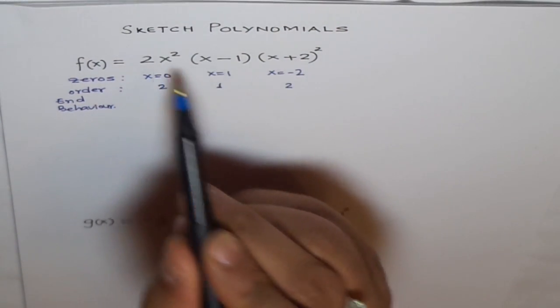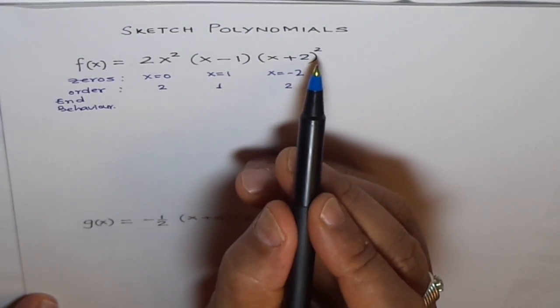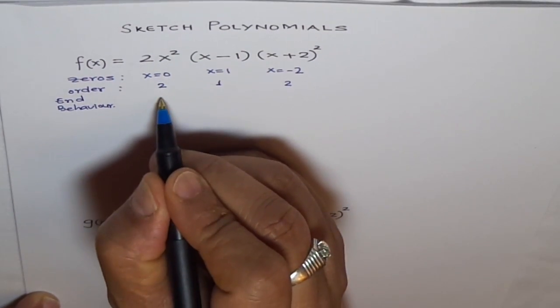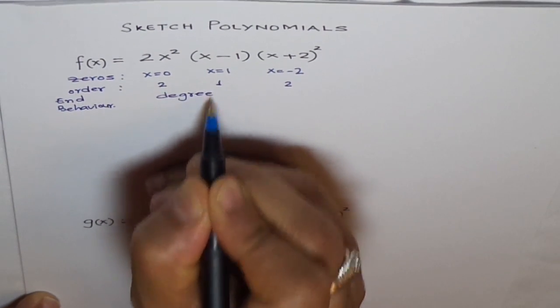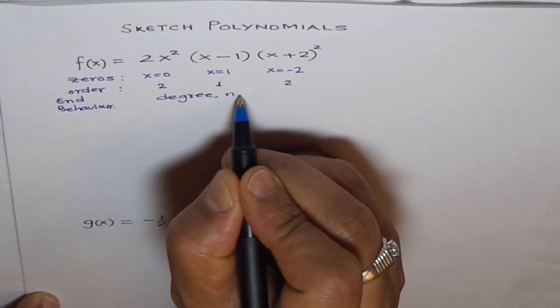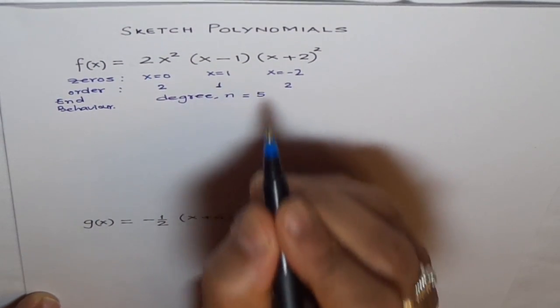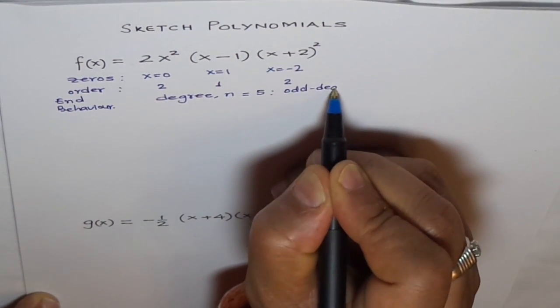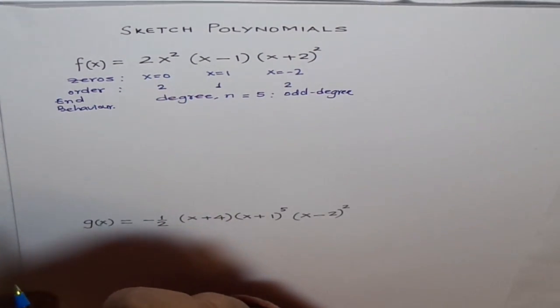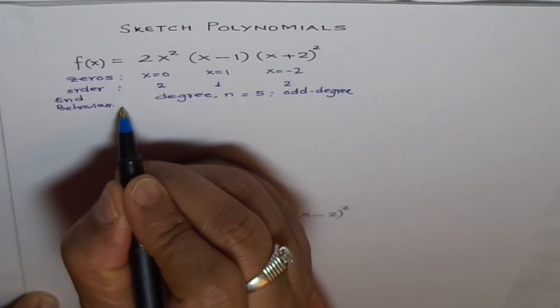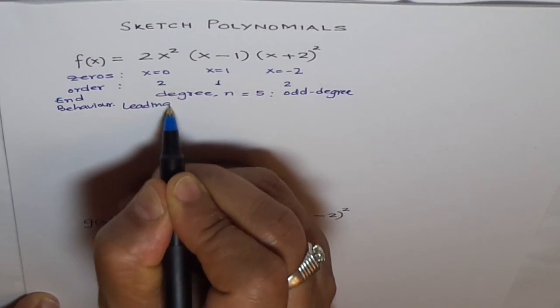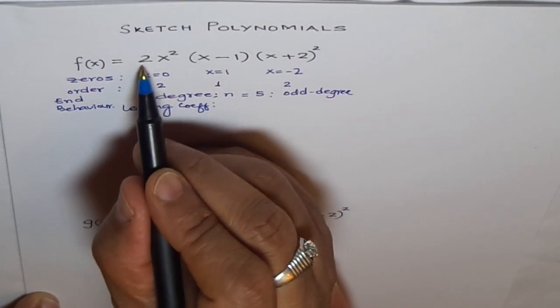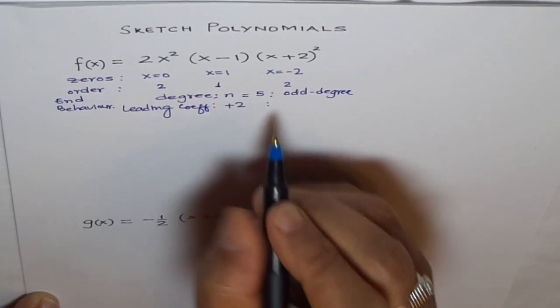When you multiply them because they are given in the factored form, the degree is 2 plus 1 plus 2, so the degree is 5. This is an odd degree function. How about the leading coefficient? It's 2, which is positive.